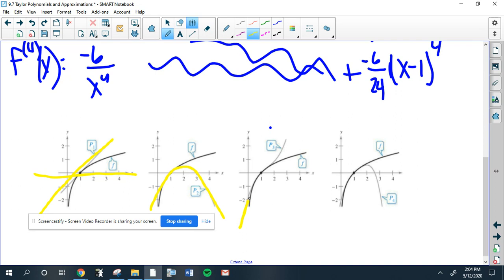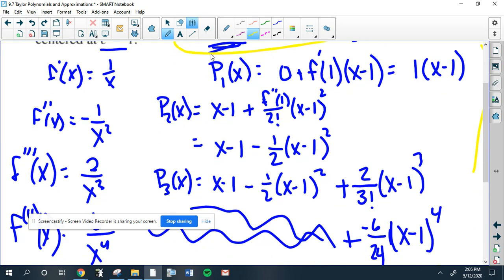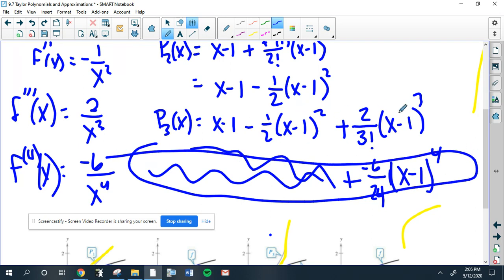The third one is a cubic, so it's going to hug it even longer and longer, so it's going to be even closer. And then the last one is a fourth degree, and it hugs this graph for longer. So sometimes you'll be asked: all right, approximate the natural log of 1.1 by using the fourth degree Taylor polynomial. So you go down to your P₄ and you just plug in 1.1 for all these X's, and it'll give you a very good approximation. Look at that in the videos coming up.